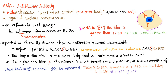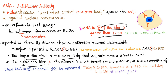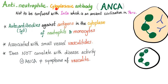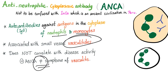Quick review: anti-nuclear antibodies are antibodies against the nucleus, and the titer is positive only if it's greater than 1 to 80. They are present in many diseases, so by definition they are not specific. The higher the titer, the more likely you have an autoimmune disease — but the higher titer does not correlate with disease severity. Next, anti-neutrophilic cytoplasmic antibodies: ANCA are antibodies against the cytoplasm of neutrophils and monocytes, associated with small vessel vasculitides. Again, they do not correlate with symptoms or severity.